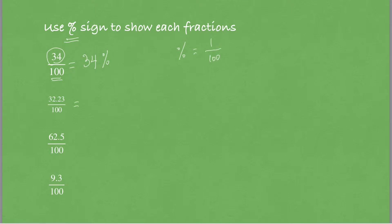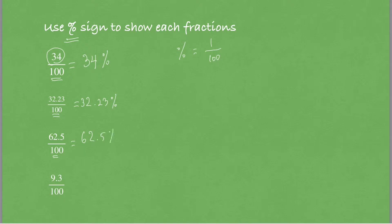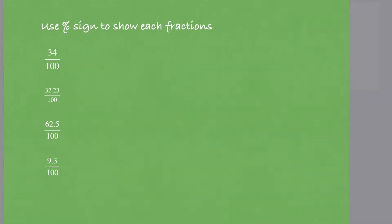The second example is 32.23 out of 100. Again, the denominator is 100, so I write the numerator as it is: 32.23 percent. Next example: 62.5 out of 100 — denominator is 100, so we write 62.5 percent. The last example is 9.3 out of 100, so we write 9.3 percent, because the denominator is 100.